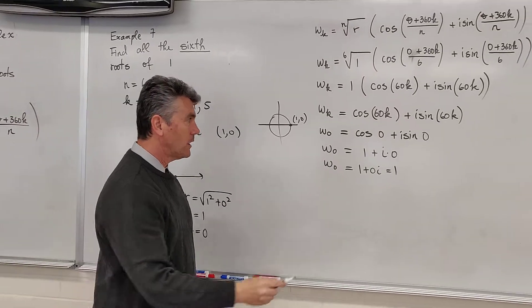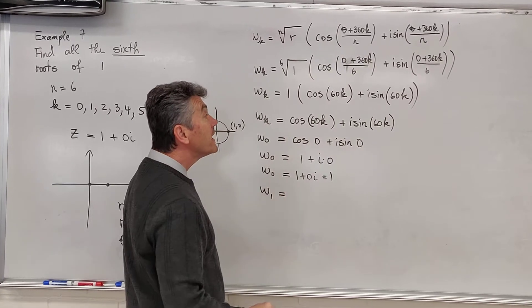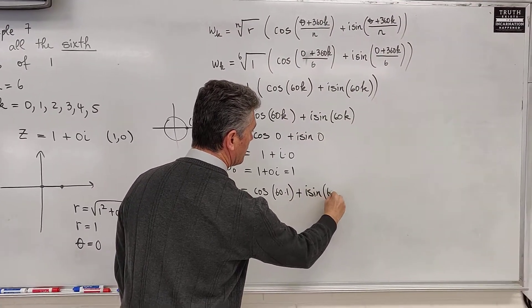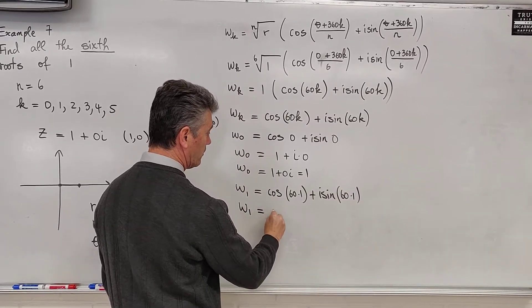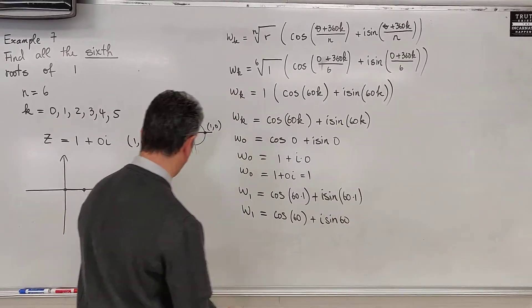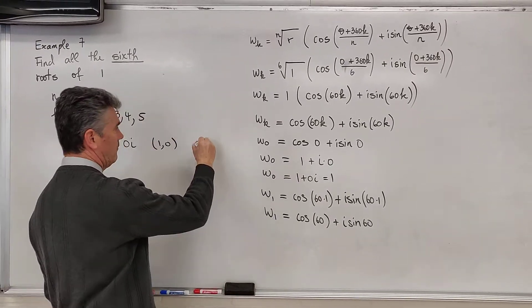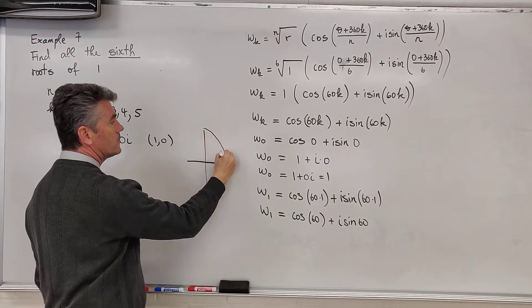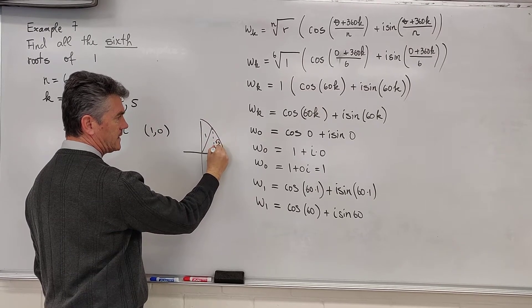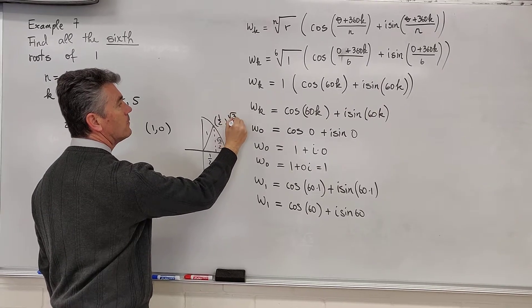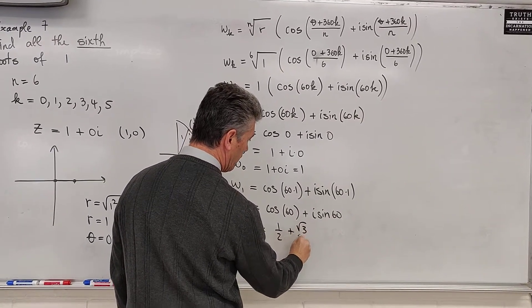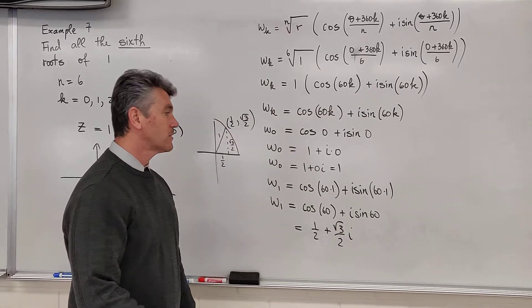For w sub 1, we replace k by 1: cosine of 60 times 1 plus i sine of 60 times 1, so w sub 1 equals cosine of 60 plus i sine of 60. Drawing a 60-degree angle on the unit circle in the first quadrant, we get cosine of 60 equals 1/2 and sine of 60 equals √3/2. So w sub 1 equals 1/2 plus i√3/2.